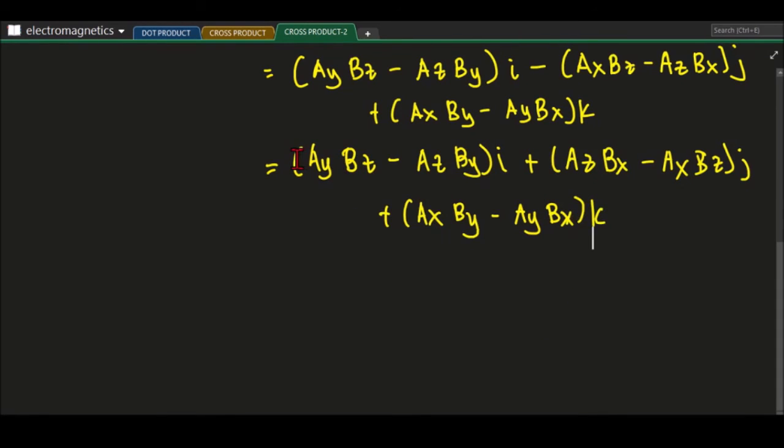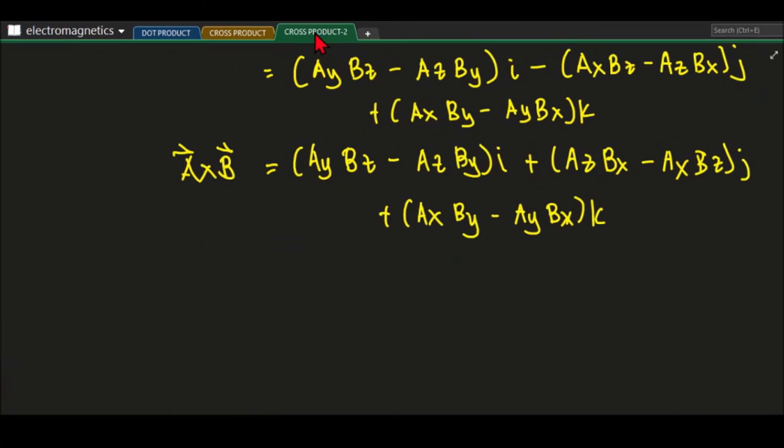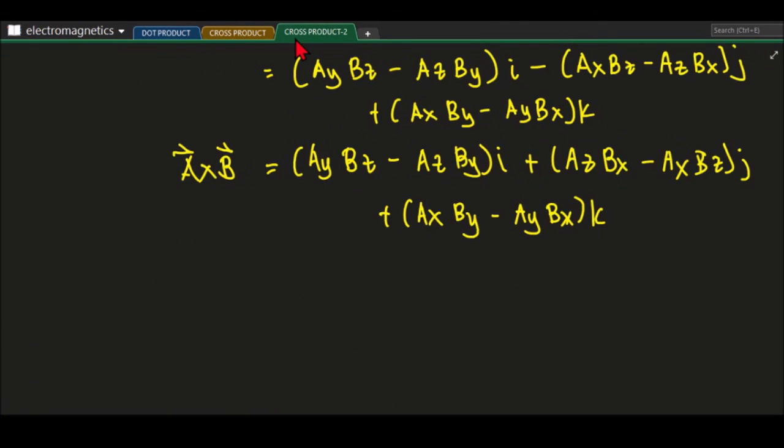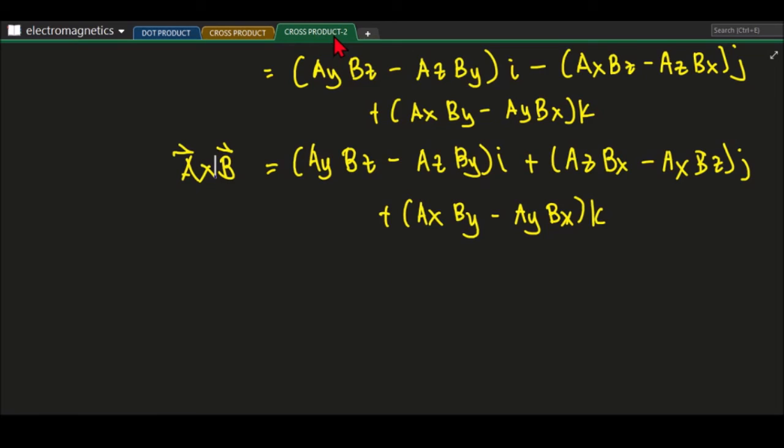So if you will compare this one, this is now our cross product of vector A and vector B. If you compare this one to the previous, just compare. So this A y B z, A z B y. We have A y B z, A z B y. So it's correct. Then you have A z B x minus A x B z. So A z B x minus A x B z. Correct. Then you have A x B y minus A y B x. Correct.